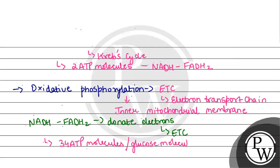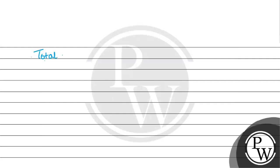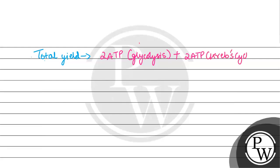Calculating the total yield: 2 ATP molecules come from glycolysis, plus 2 ATP molecules from the Krebs cycle, plus 34 ATP molecules from oxidative phosphorylation. So in total, about 36 to 38 ATP molecules are generated per glucose molecule.